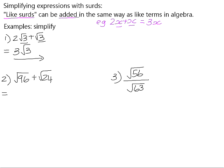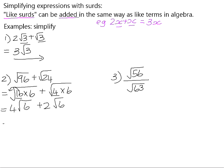So 96 is a product of 16 times 6 and 24 is a product of 4 times 6. Remember from the previous video that you watched, the goal is to find a factor of the number that is a perfect square because then you can square root it and take it outside of the surd sign. So you'll have 4 square root 6 plus 2 square root 6. 4 square root 6 at 2 square root 6 is 6 square root 6.